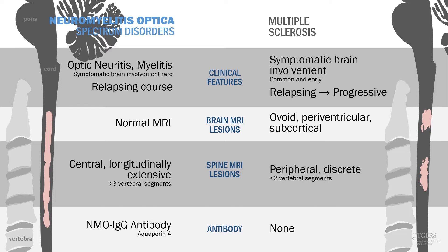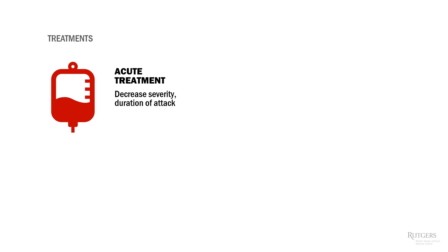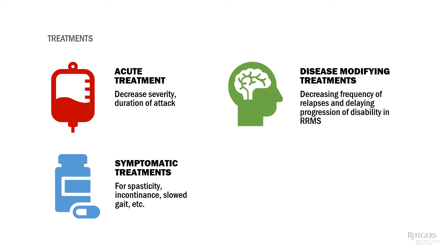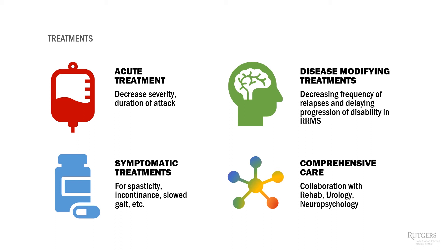There are four major types of MS treatment to consider. First, acute treatment for MS relapses — most commonly high-dose IV steroids. Second, disease-modifying treatment — not a cure, but it reduces disability progression, decreases relapse rate, and decreases new MRI lesions. Third, symptomatic treatment for depression, spasticity, and neuropathic pain. Fourth, multidisciplinary care — you work with rehabilitation specialists, urology, and neuropsychology, and need to know when to refer.